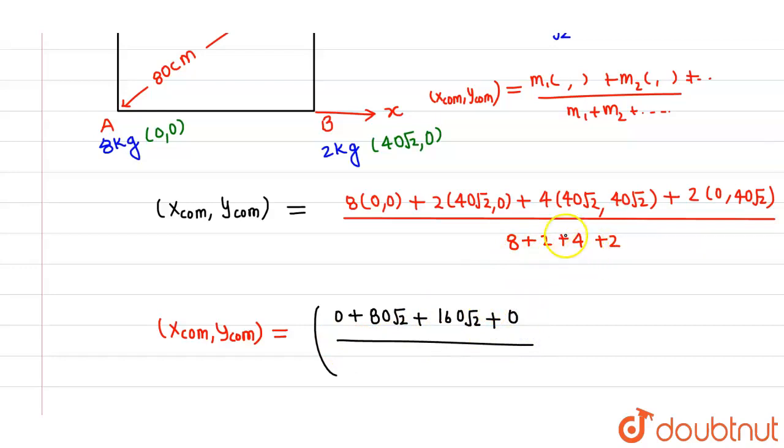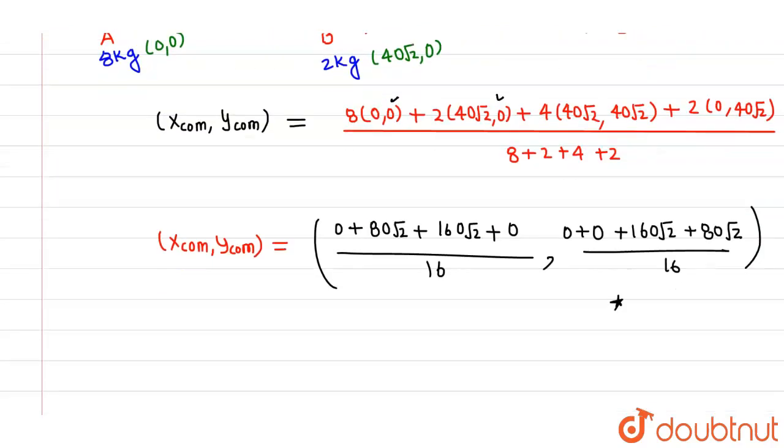Divided by the total mass, 8 plus 2 is 10, and 10 plus 6 is 16. The second coordinate is 0 plus 0, plus 160√2 plus 80√2, divided by 16. These are the coordinates of center of mass. If I again simplify this, this is 240√2 divided by 16, comma, 240√2 divided by 16. These are the x and y coordinates of the center of mass.